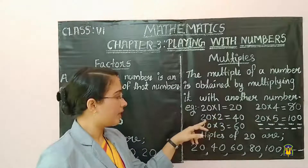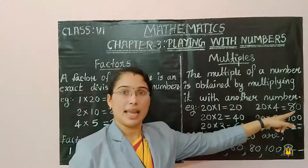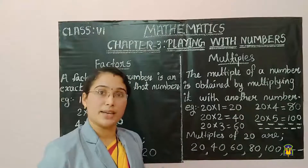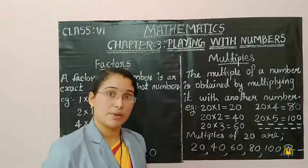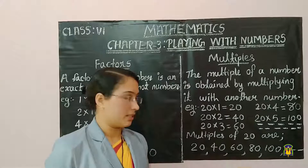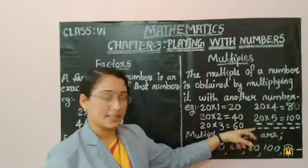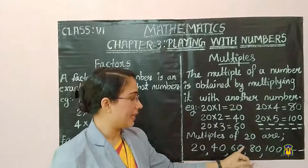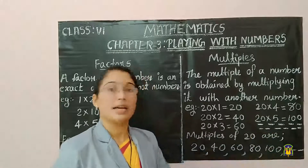20 into 1 gives 20. Then 20 into 2 gives 40, 20 into 3 gives 60, 20 into 4 gives 80, then 20 into 5 gives 100. We can continue with 20 into 6, 20 into 7, 20 into 8, and all the counting numbers. How many multiples will we get? We will get uncountable multiples — that means the multiples are infinite. So the multiples of 20 are 20, 40, 60, 80, 100, 120, 140, and so on.